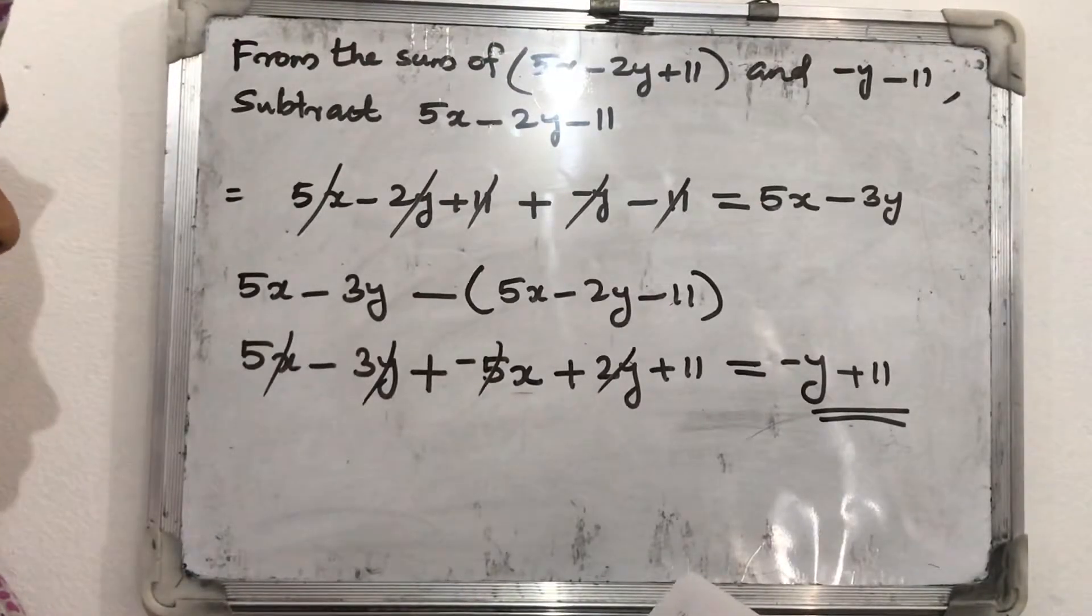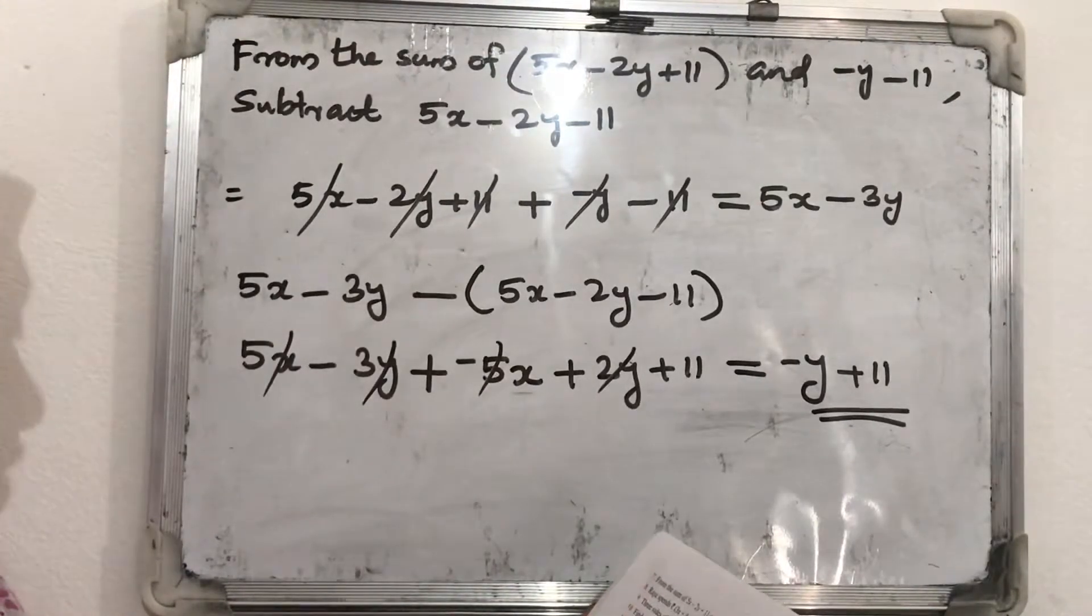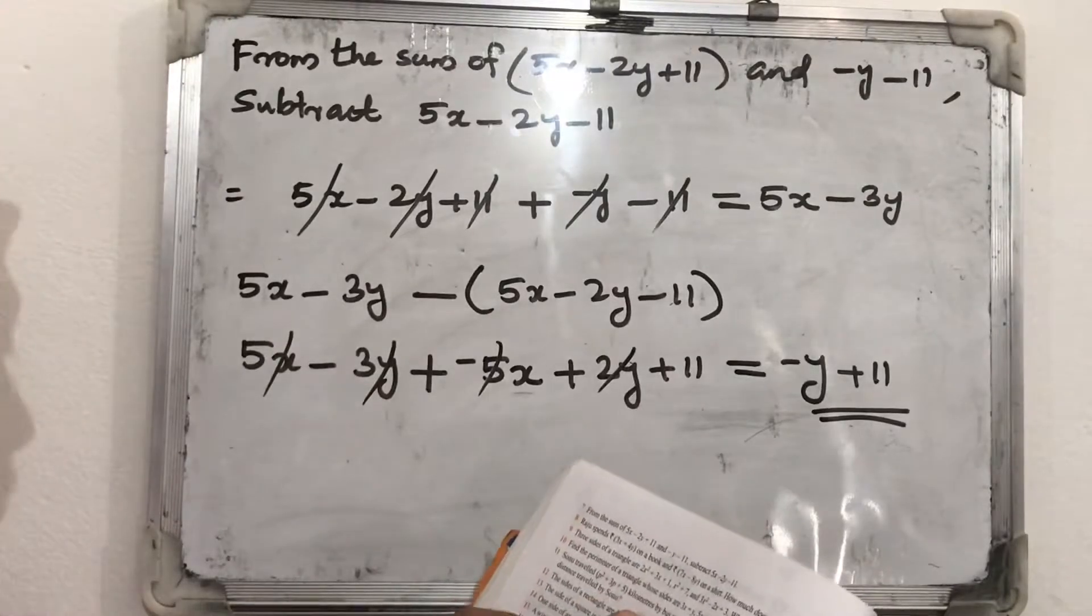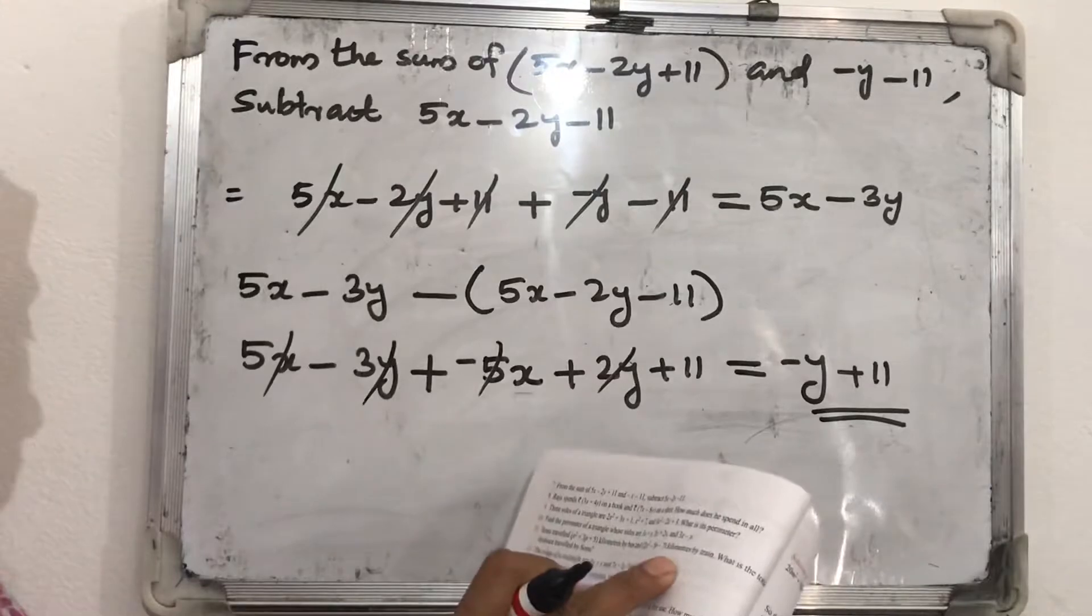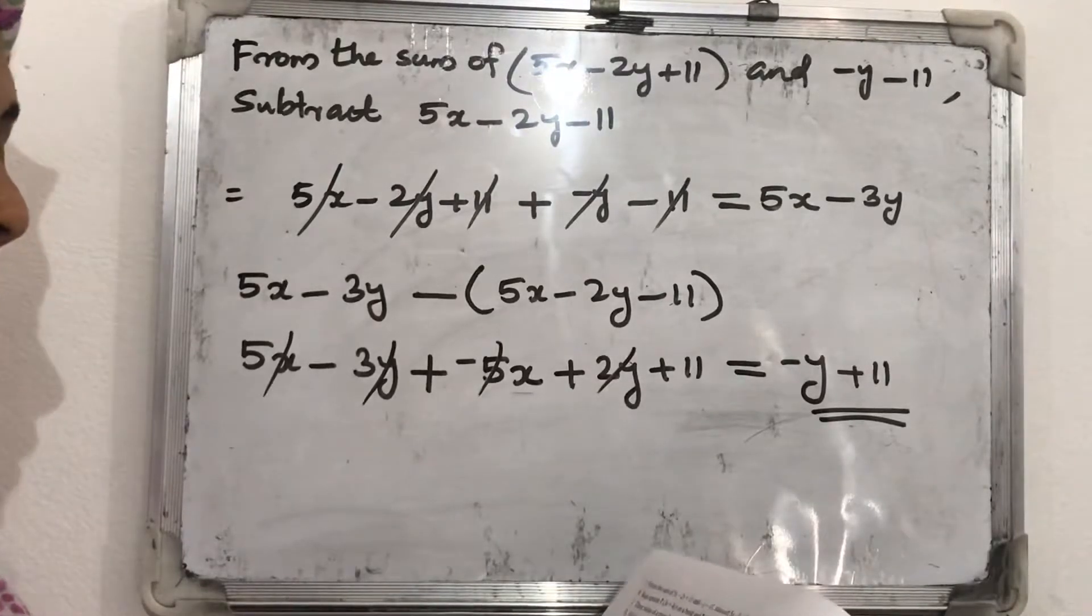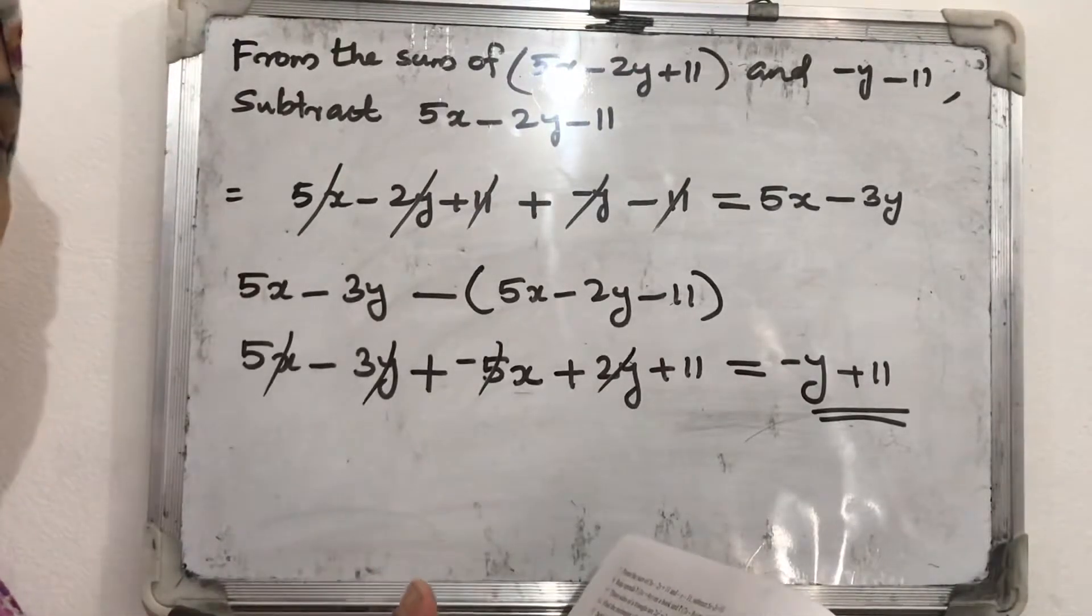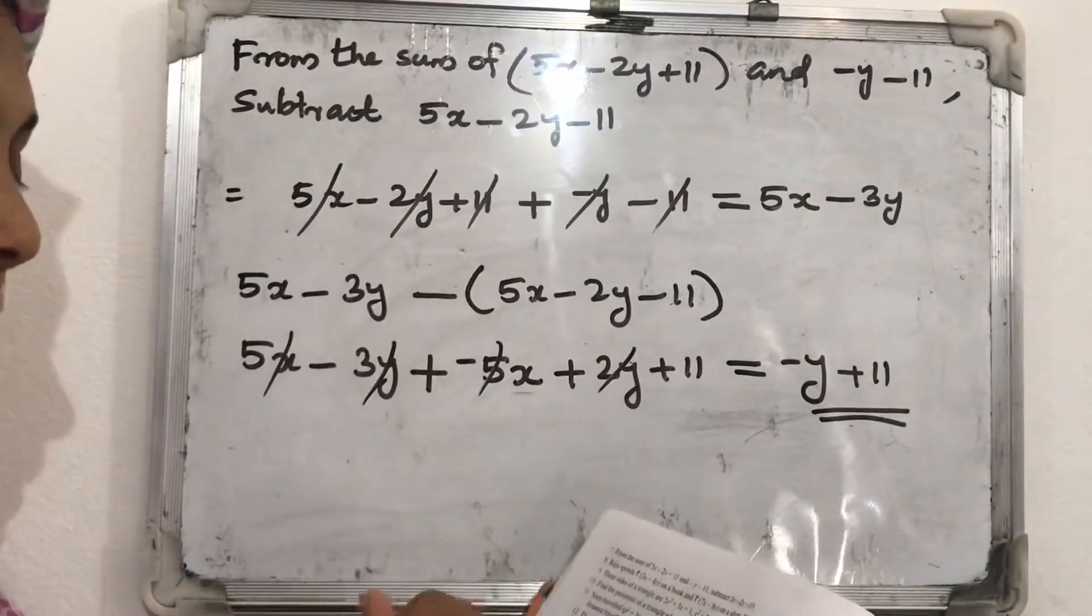If any question, any difficulty question? Sonu travels p square plus 3p plus 5 kilometers by bus and 2p square minus 5p minus 7 kilometers by train. What is the distance travelled by Sonu? So total distance for finding, you can do. Add those expressions.